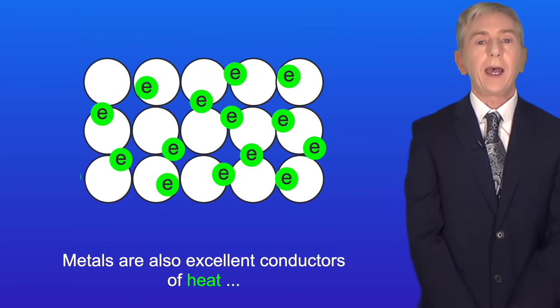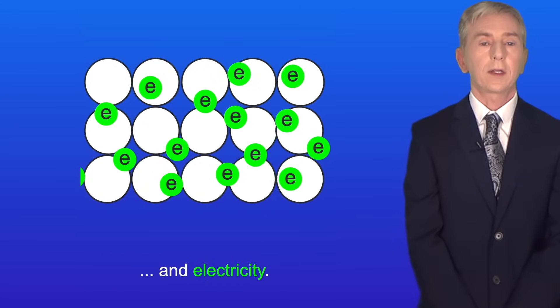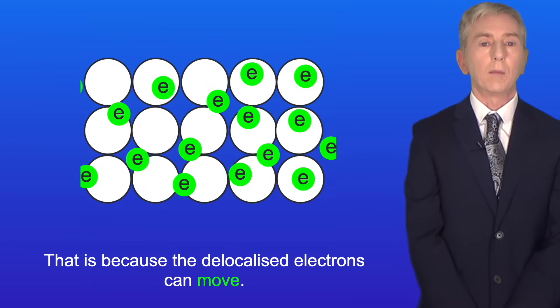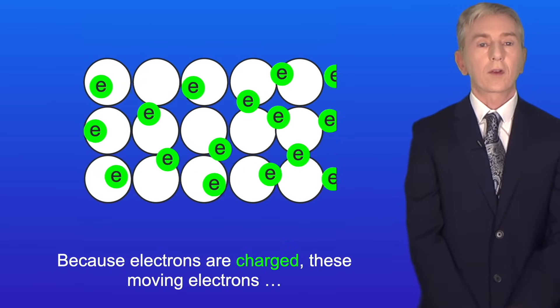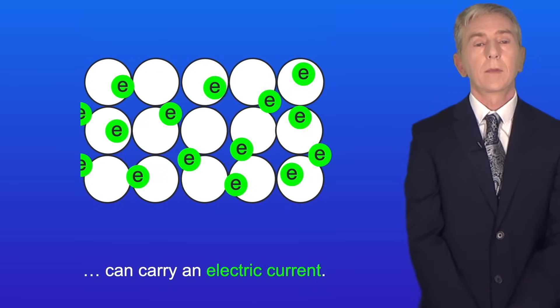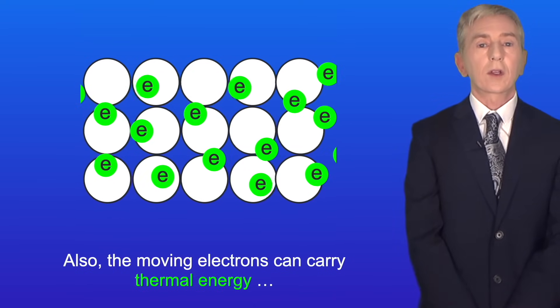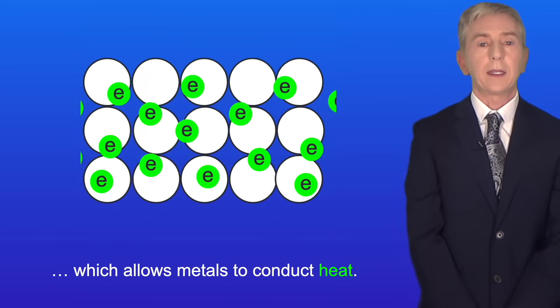Metals are also excellent conductors of heat and electricity. That's because the delocalized electrons can move. Because electrons are charged these moving electrons can carry an electric current. Also the moving electrons can carry thermal energy which allows metals to conduct heat.